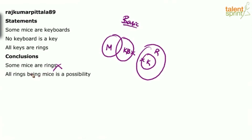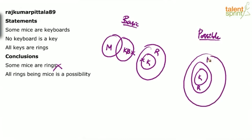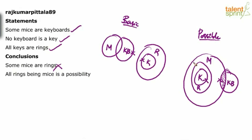Let me draw the possible diagram that satisfies the second conclusion. Let's say these are keys, these are rings, all the rings are inside mice, and these are keyboards. All the conditions are satisfied: some mice are keyboards — yes; no keyboard is a key — keyboards and keys do not touch each other; all keys are rings — satisfied. We have not violated any statements. And the conclusion says all rings being mice is a possibility — yes, all rings can be mice. So only two follows, and that is the answer.